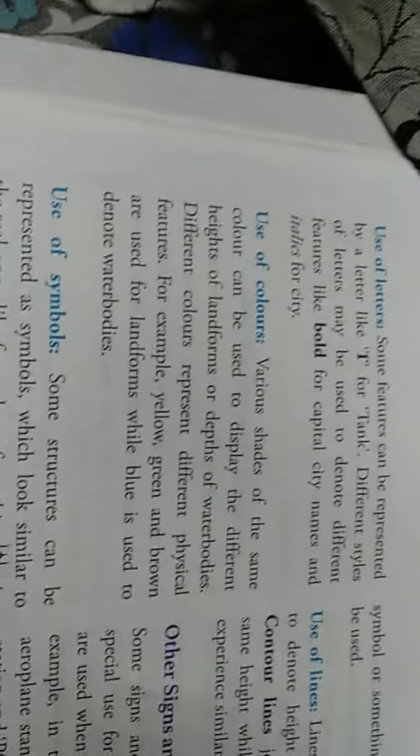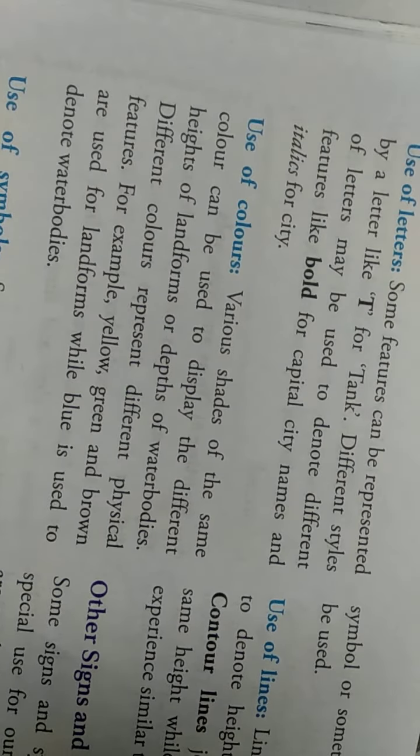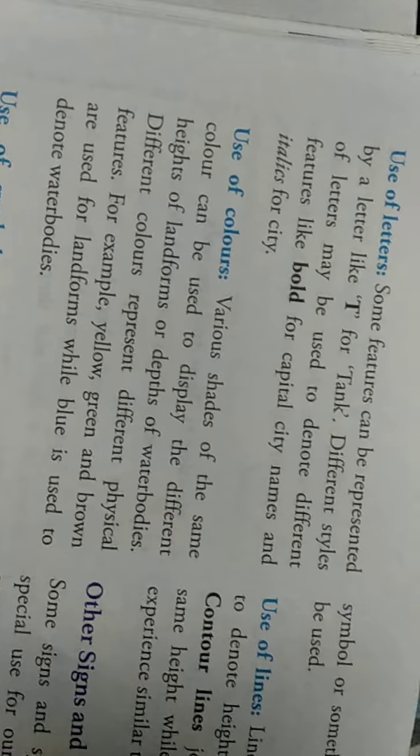Okay, let's start. So now the topic is signs and symbols. As I told you, these are the signs we will see something more about. Uses of letters like T for tank in bold letters and italics for cities are shown on a map.